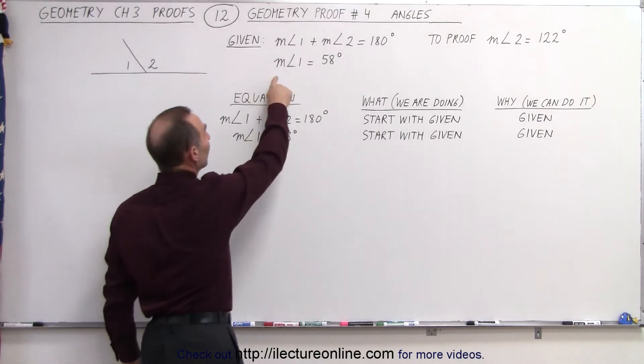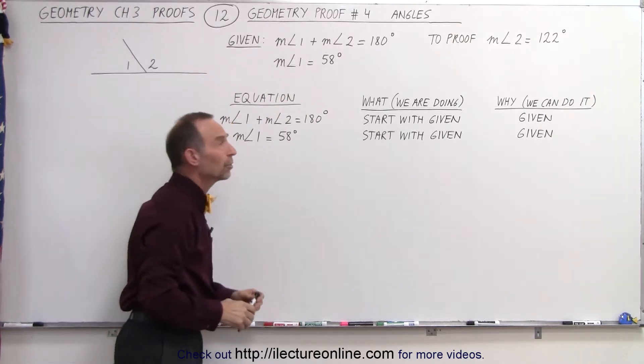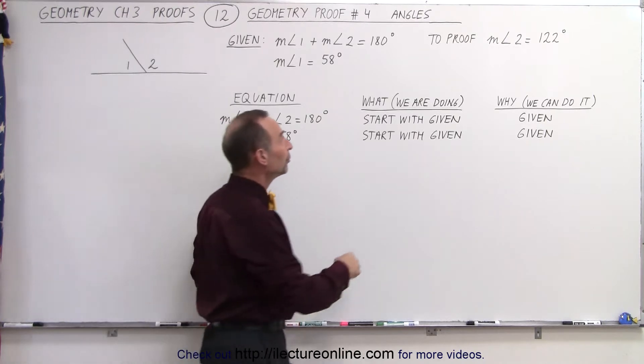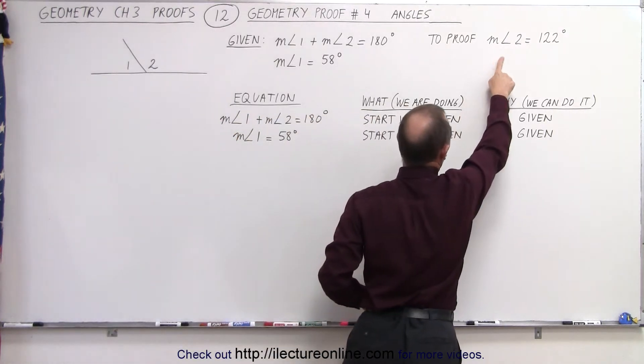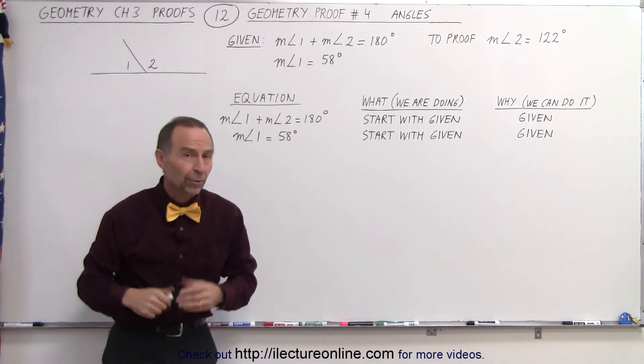We're also given that the measure of angle 1 is equal to 58 degrees. And then we're trying to prove that the measure of angle 2 must therefore be 122 degrees.